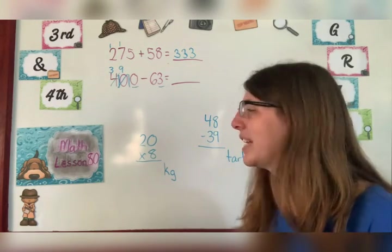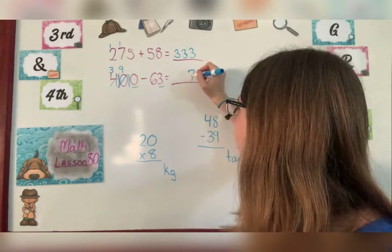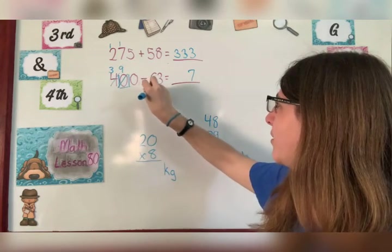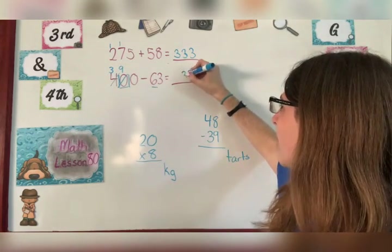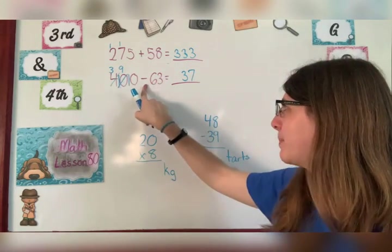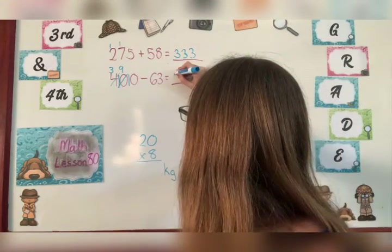Ten minus three is seven. Now I'm going to do the numbers in the tens place. So I have nine minus six is three. Now I have a three here in the hundreds place, but nothing here. So it's like three minus zero. And it is three.